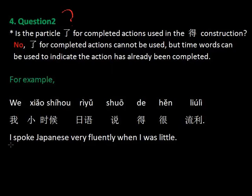现在我们来看一下第二个问题：在这个 得 的结构中，time 用在哪里？答案是 time always before the verb。我们来看一个例子：我小时候日语说得很流利。所以 time 在这里，前面，然后就是 the 得 construction。